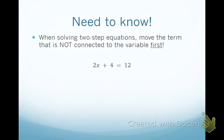One of the first concepts you need to know is this statement: when solving two-step equations, you move the term that is not connected to the variable first. Here's a sample equation to write in your notes — 2x plus 4 equals 12. You can see there are now multiple terms on the side of the equation with the variable.